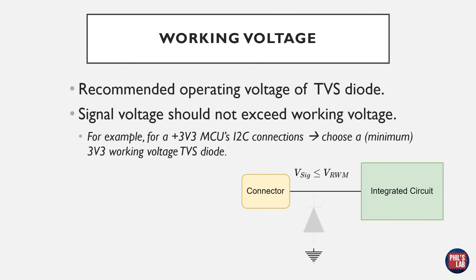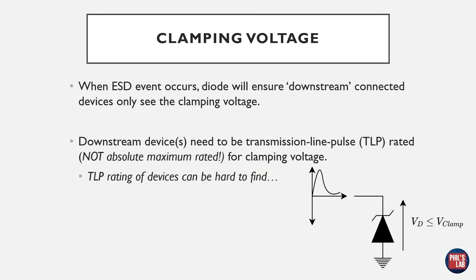The working voltage is one of the most important parameters — it's the recommended operating voltage of the TVS diode, and the signal voltage should not exceed it. For example, if our microcontroller is running at 3.3 volts and communicating via I2C to a connector and off-board device, we want the working voltage of the TVS diode to be at least 3.3 volts. The clamping voltage is relevant when an ESD strike occurs — the TVS diode will clamp that transient voltage to whatever the clamping voltage is of that diode, which might be 12, 15, or 20 volts.